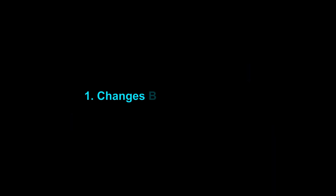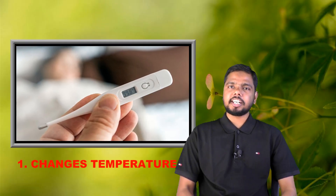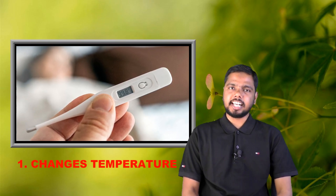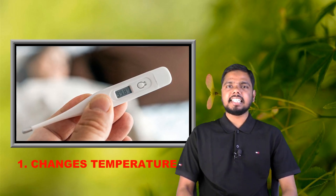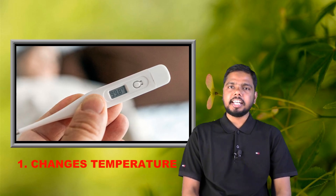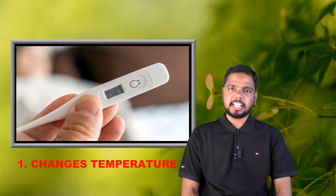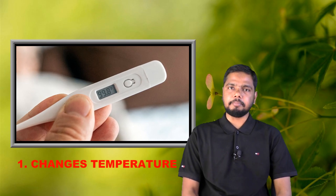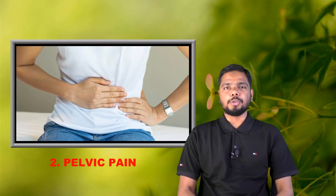Now I will discuss the top 5 symptoms of ovulation. Your basal body temperature can increase during ovulation compared to normal times. This increasing temperature can stay until your next period. If you become pregnant during the ovulation time, your temperature can stay higher for a long time.